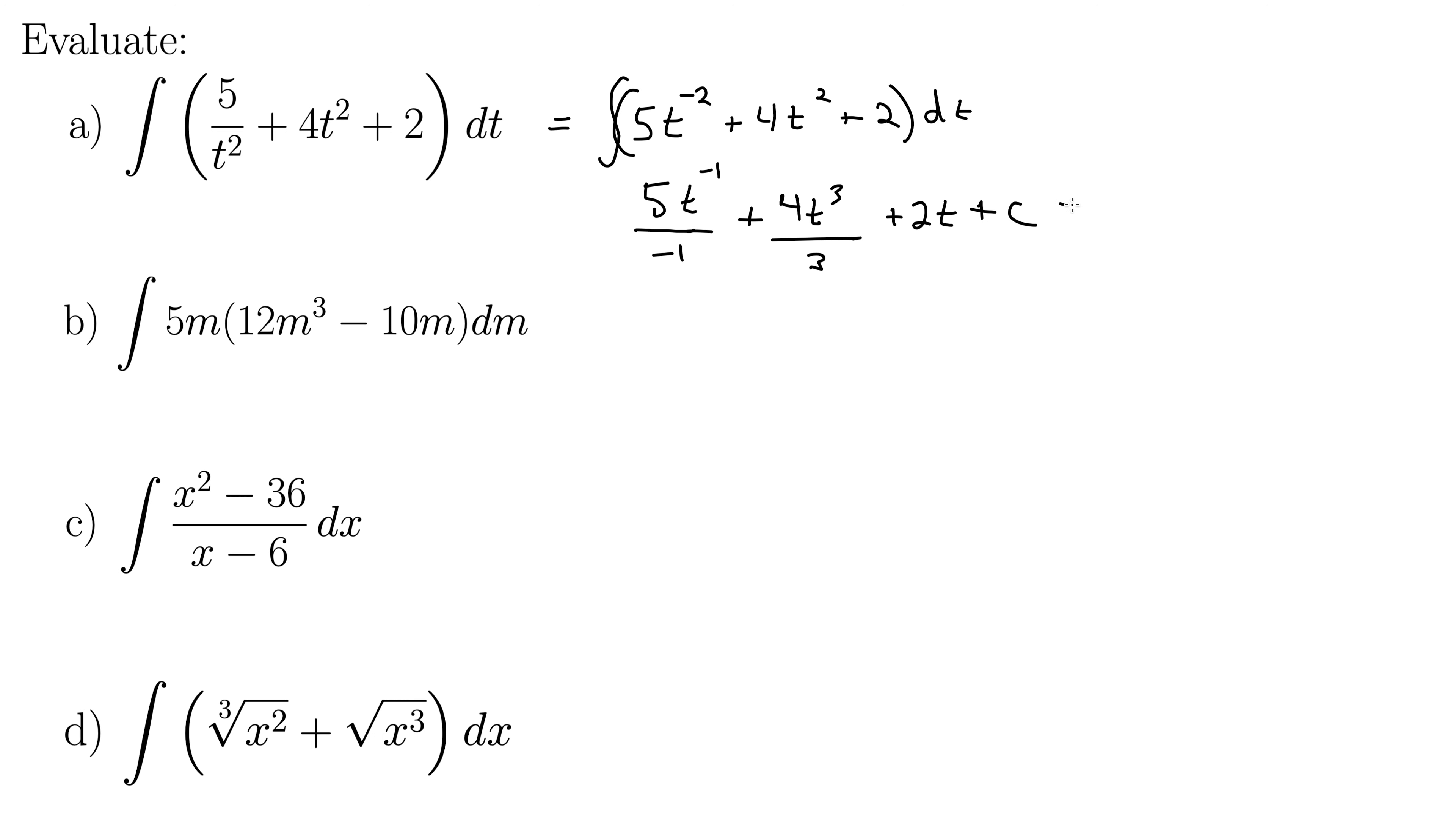Let's clean this up a little bit. Maybe we can make this, say, 4 thirds t cubed minus 5 over t plus 2t plus c. There you go. It always helps put answers in a nice form, if possible.